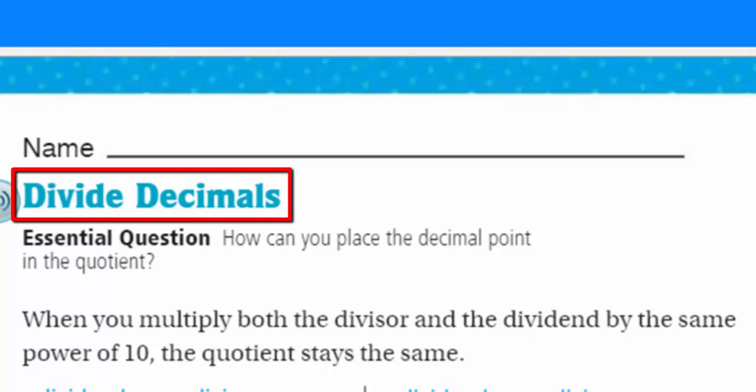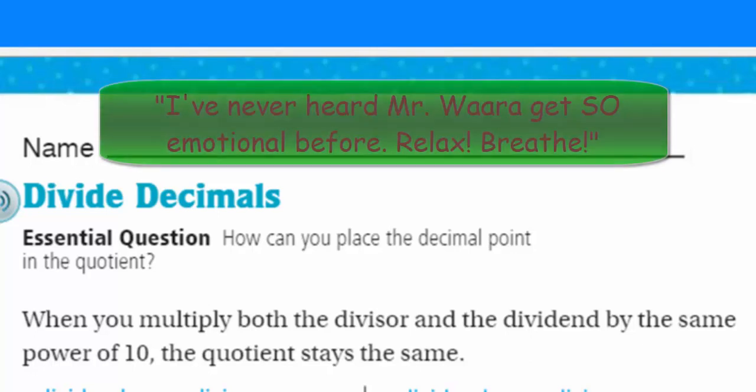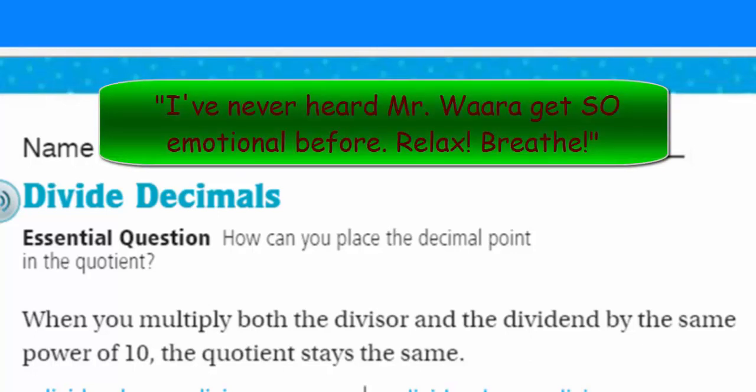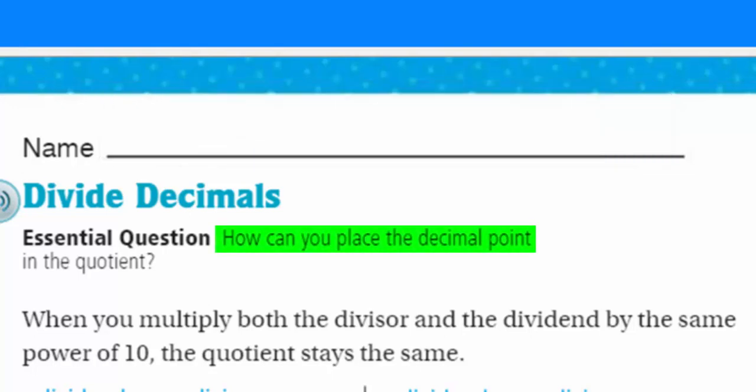Yes, it's what we've been doing a little bit here. Dividing a little bit of decimals. Our essential question. This is what focuses us, guides us through this lesson. This is our purpose. We are going to answer this question: How can you place the decimal point in the quotient? The quotient is just that answer in a division problem. And our decimal point is very crucial where we place that because it changes the value of our number.